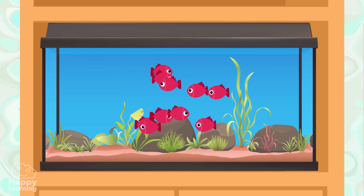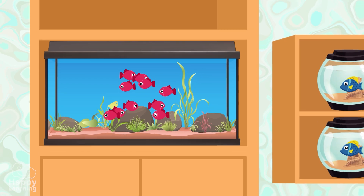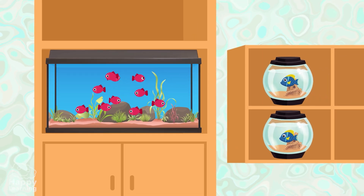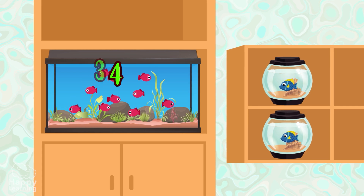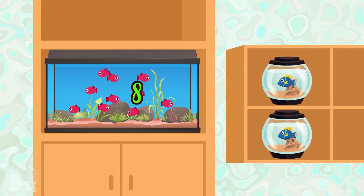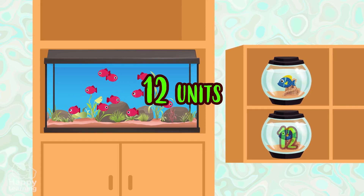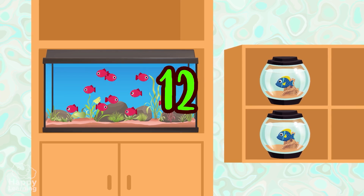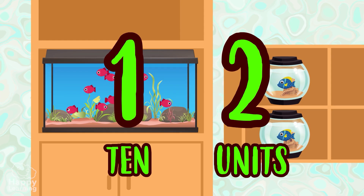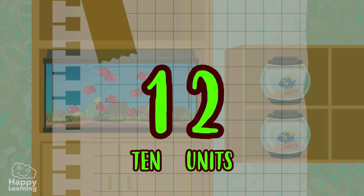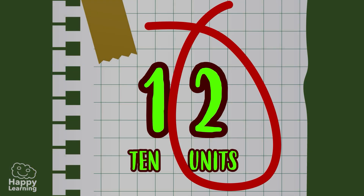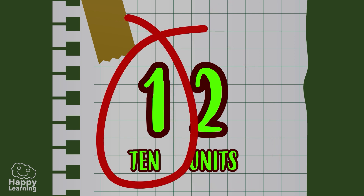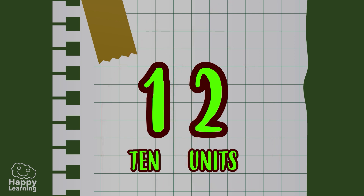Let's leave our fish tank here, with two. Because here come two more fish! If we count them all now, we'll have twelve units — twelve fish. Or in other words, a ten and an additional two units. The units are in the first position, starting from the right, and the tens in the second position, always starting from the right.